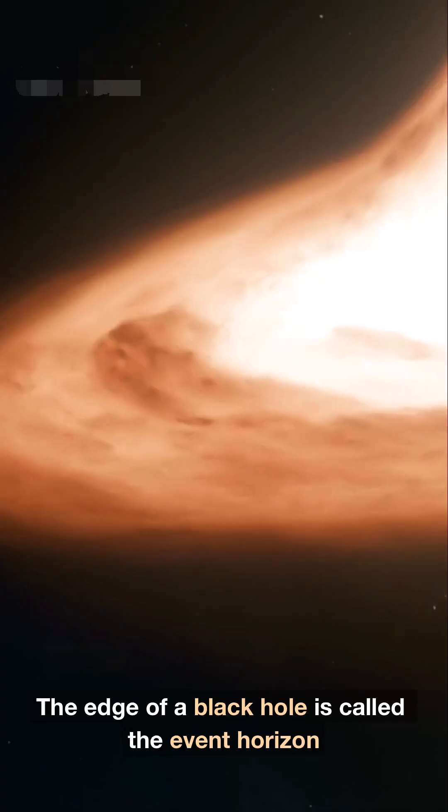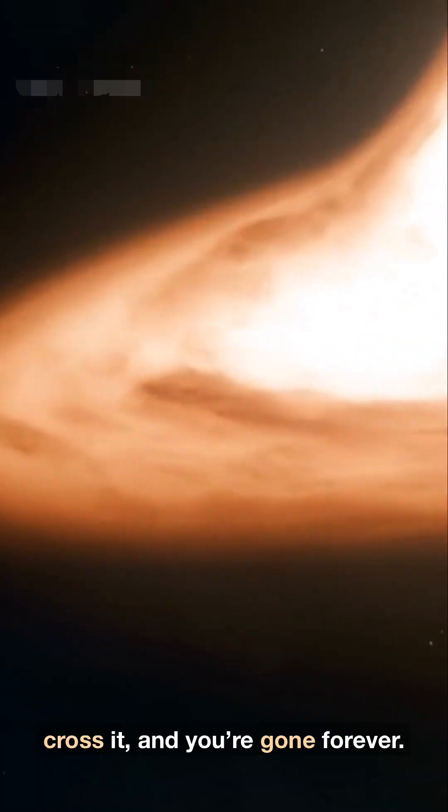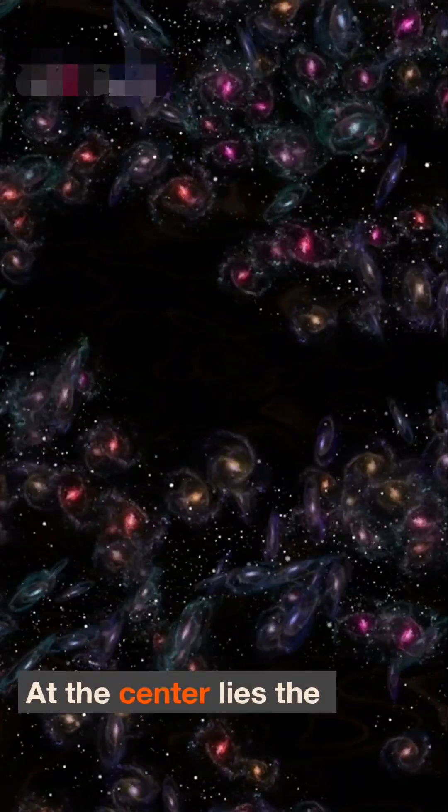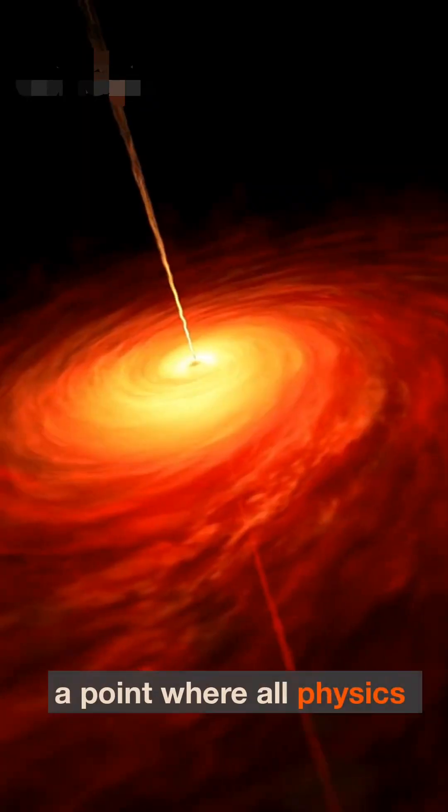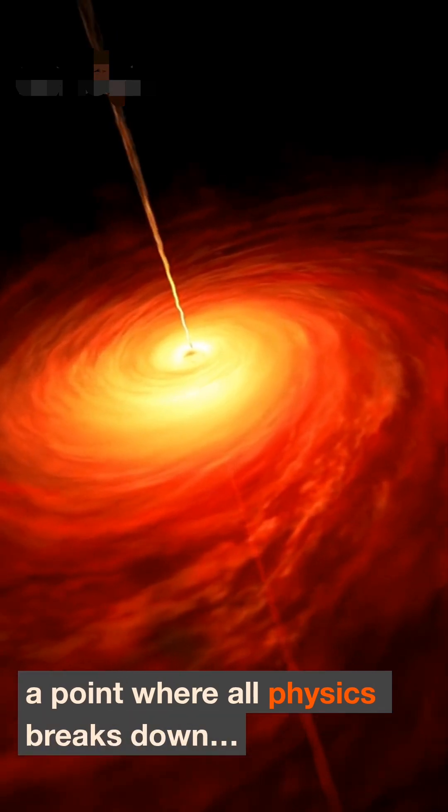can escape. The edge of a black hole is called the event horizon. Cross it and you're gone forever. Time itself slows down near it. At the center lies the singularity, a point where all physics breaks down and scientists